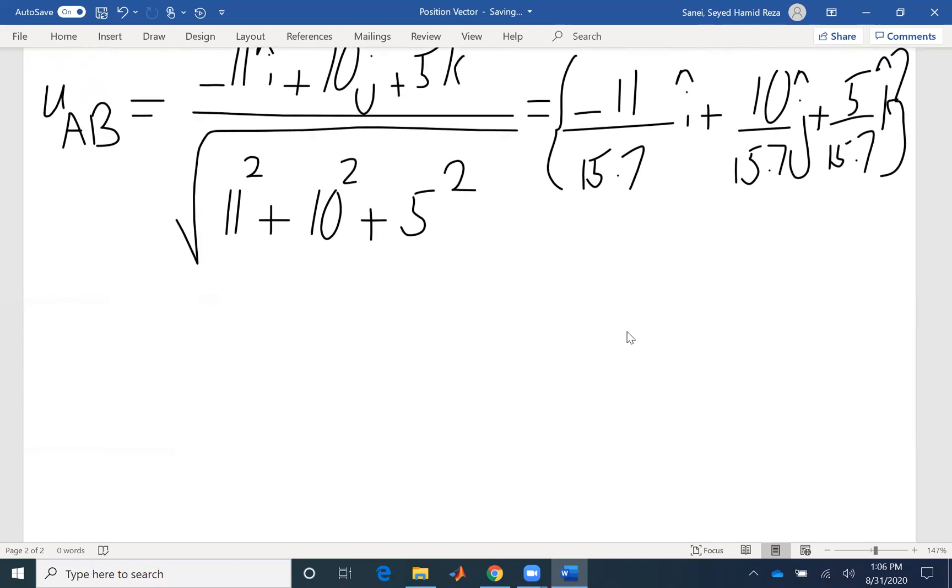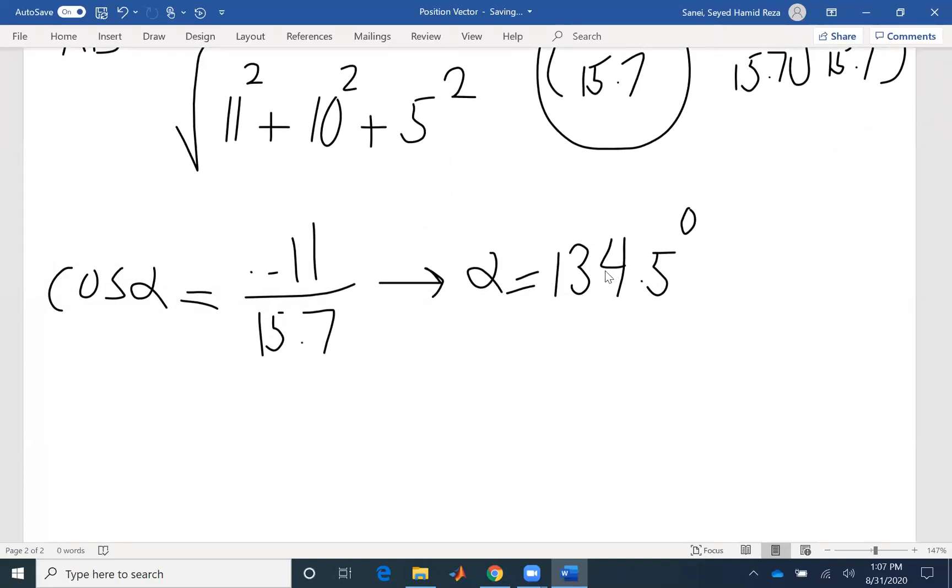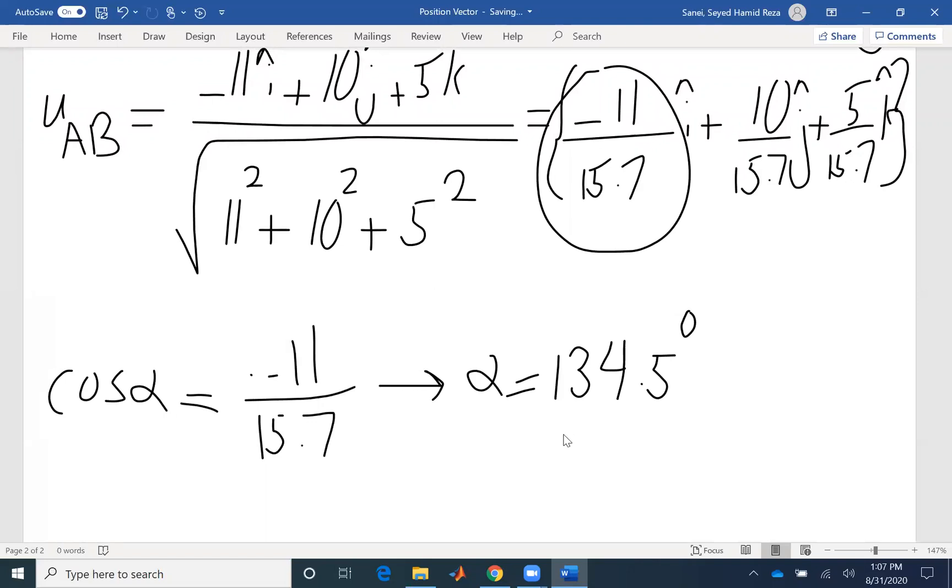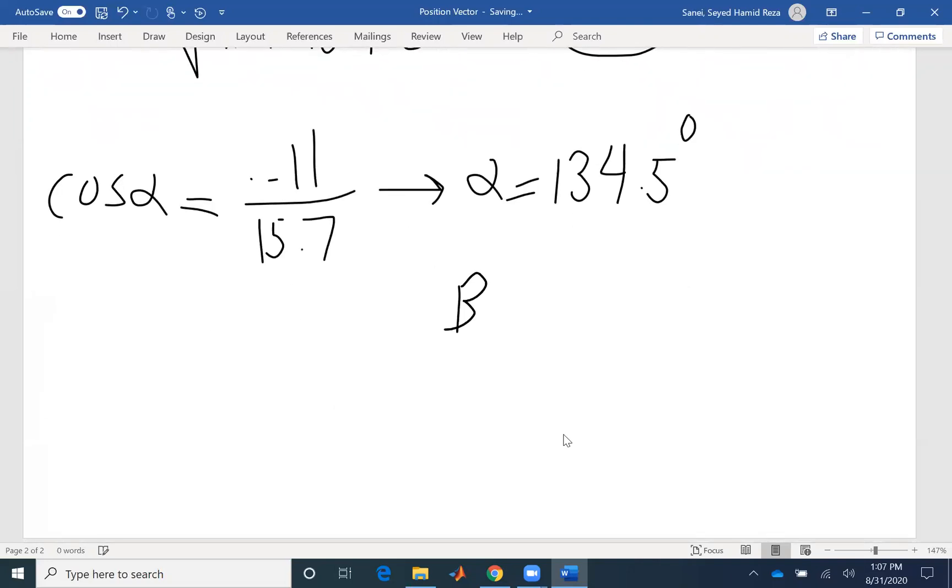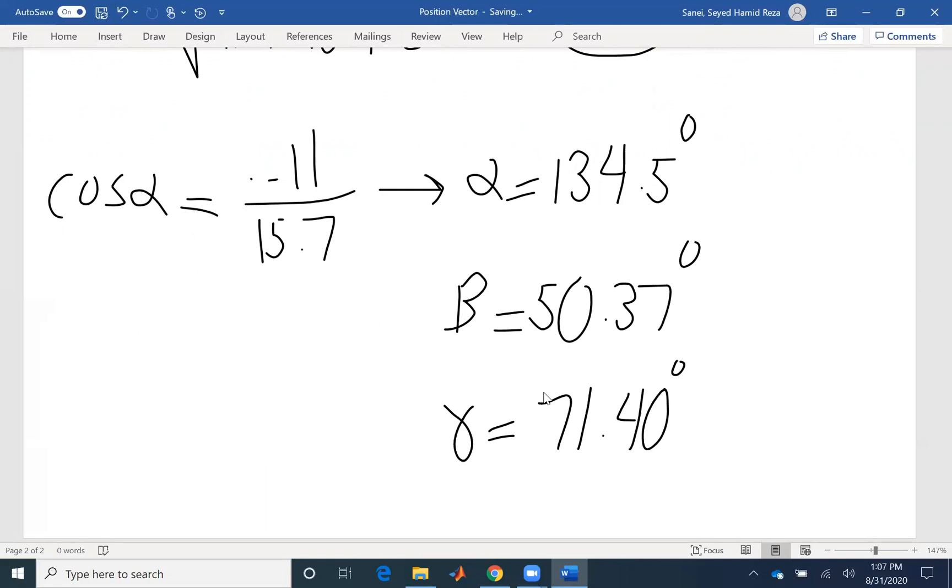For every vector, we can find the corresponding coordinate direction angles. So cosine alpha, the angle between our vector and x axis, would be -11 over 15.7, so alpha would be 134.5 degrees. You can see it's more than 90 simply because the value we have is negative. You could do the same for beta and gamma. Beta is 50.37 degrees. I want you to find beta and gamma yourself, then compare your answer with mine to see if you get the same value.